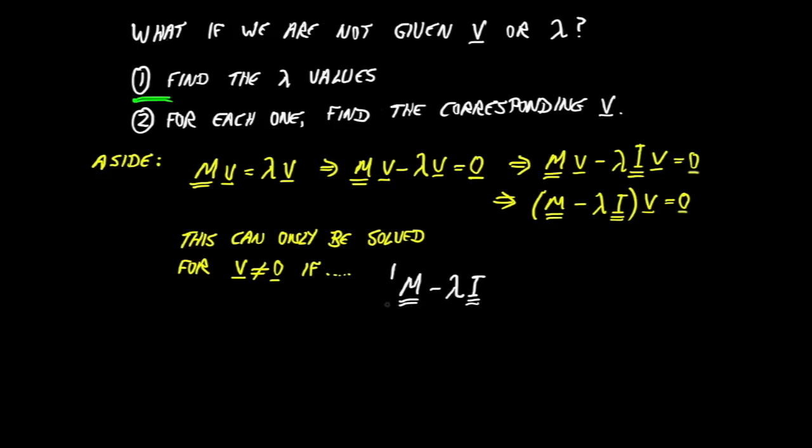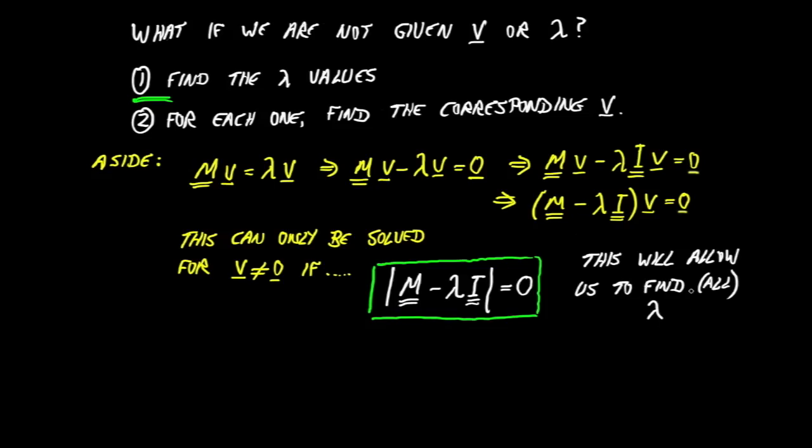M minus lambda times the identity, the determinant of that is equal to 0. So we're going to have plenty of time to think about that, but let me just put a green box around it, because that is the fundamental equation we're going to use. This will allow us to find all the eigenvalues that satisfy our basic eigenvalue equation.